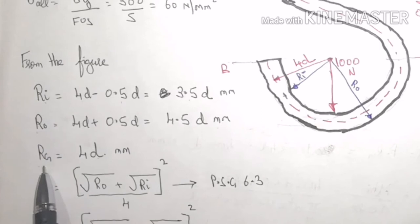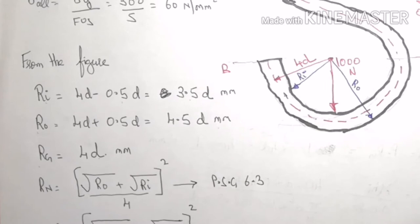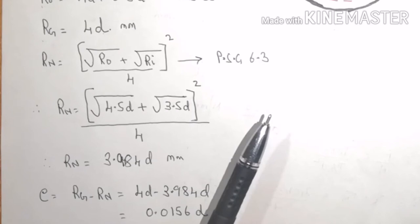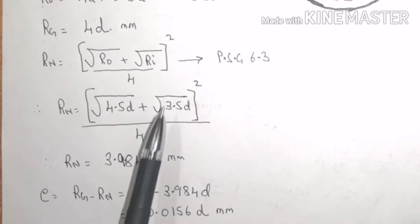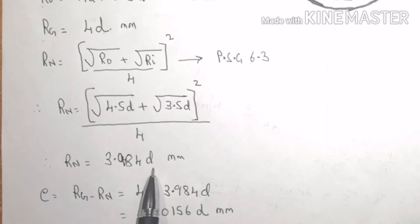After finding out Ri, Ro and Rg, next step will be able to find out Rn. For Rn we have the formula from PSG, substituting the values I will get Rn is equal to 3.984D because D is not known to us.